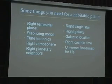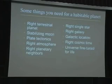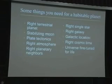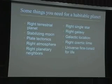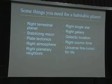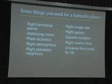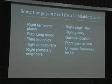You need to have plate tectonics. Plate tectonics cycle the elements of life — in particular, it cycles carbon. It's part of the carbon-silicate cycle, which controls the amount of carbon dioxide in the atmosphere. It also helps keep heat flowing out from the Earth at a uniform rate. You need the right kind of atmosphere; an oxygen-rich atmosphere is necessary for complex creatures like us. You need the right kind of planetary neighbors — planets like Jupiter that can protect the Earth from too many cometary impacts — and the right kind of single star.